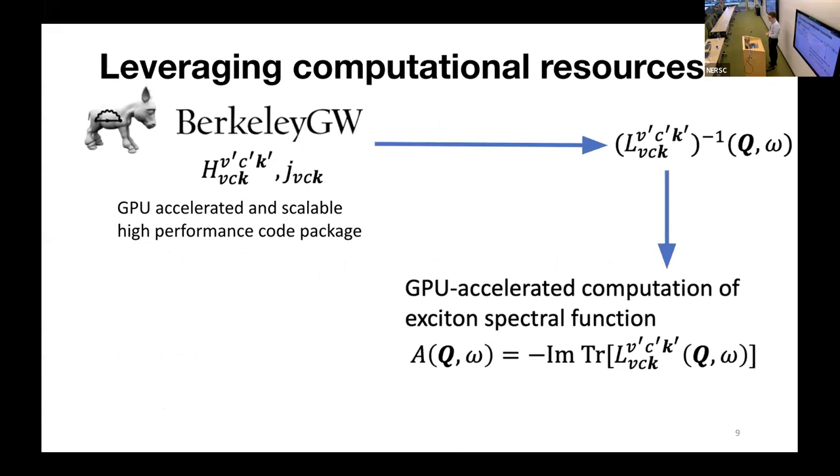How do we go about doing this computationally? We're going to leverage computational resources to do all this work. We're going to start with BerkeleyGW, which is a GPU-accelerated and very scalable high-performance code that will give us the ingredients we need to construct L inverse. Once we construct L inverse, we're going to use GPU-accelerated codes to invert this matrix and then take the trace to get our spectral function.